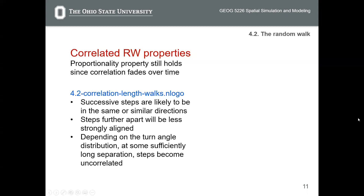Let's continue with the properties of correlated random walk. The first property is that the proportionality property still holds since correlation fades over time. I introduced this proportionality between time and the distance between the start point and end point of a random walk — it was for simple random walk, not for correlated random walk.